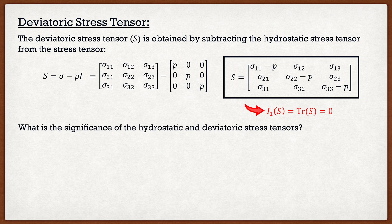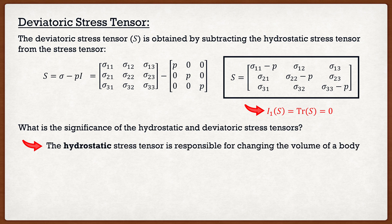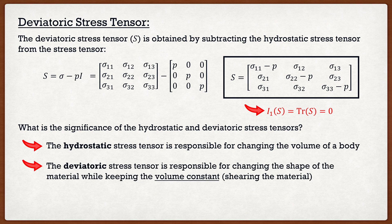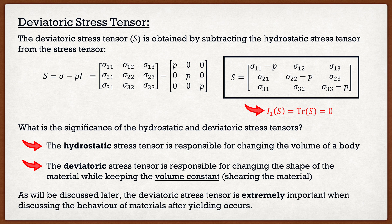The hydrostatic stress tensor is responsible for changing the volume of the body — that diagonal matrix is related to simple contraction or expansion. The deviatoric stress tensor, on the other hand, is responsible for changing the shape of the material while keeping the volume constant, or in other words, the shearing of the material. This deviatoric stress tensor is going to be extremely important when we discuss the behavior of materials after yielding occurs — plasticity. When we start talking about plasticity material models, this deviatoric stress tensor is going to come up everywhere.